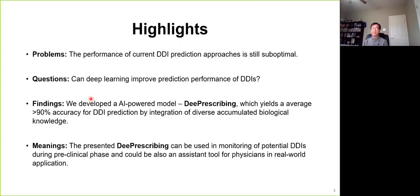Consequently, we developed an AI-powered model titled DeepPrescribing, which yields an average of more than 90% accuracy for drug-drug interaction prediction with different clinical outcomes by integration of diverse biological knowledge.